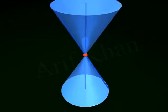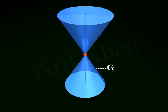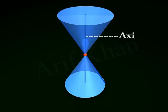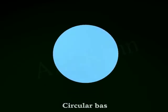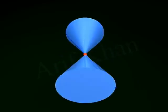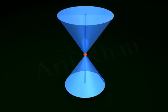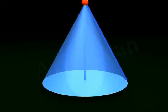The line that rotates about the vertex is called the generator, and the line that remains fixed is called the axis. A right circular cone has a circular base, and its axis is always a perpendicular line from the centre of the base to the vertex.